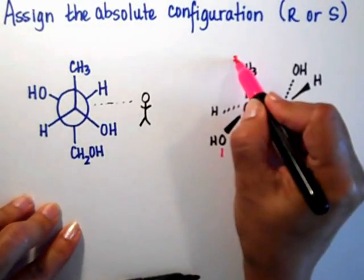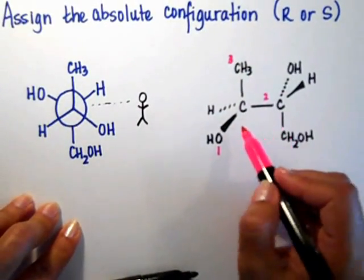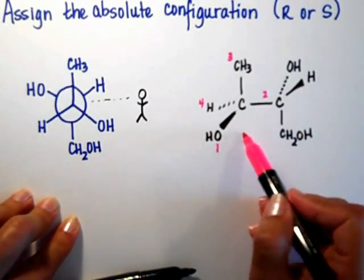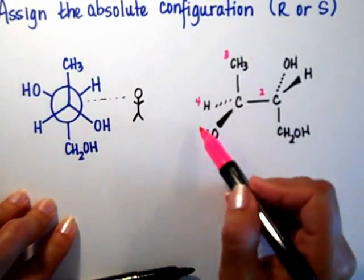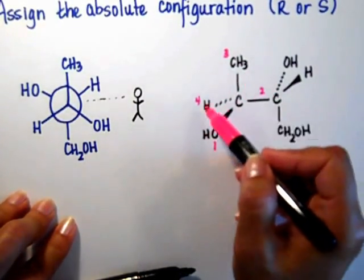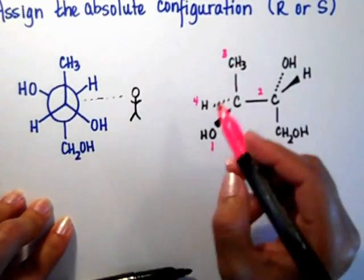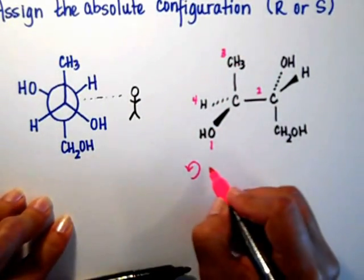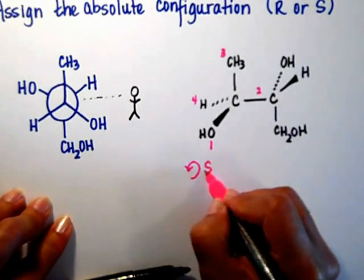The methyl is number three, and the hydrogen is number four, and it's pointing to the back, so I'm actually ready to assign the absolute configuration of this carbon, and I'm going counterclockwise. Counterclockwise is S.